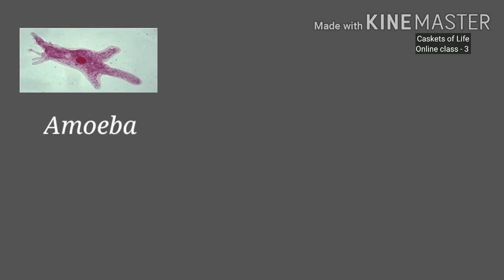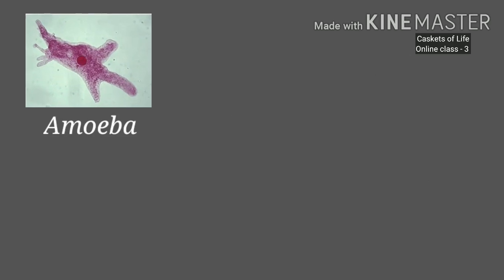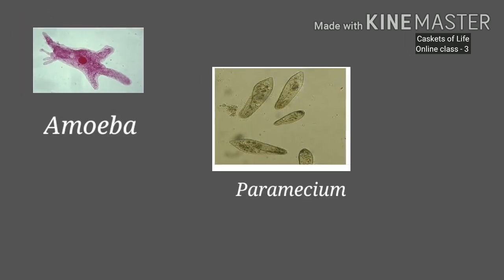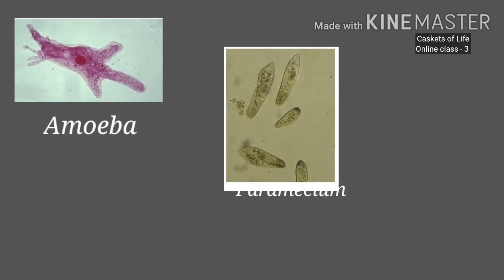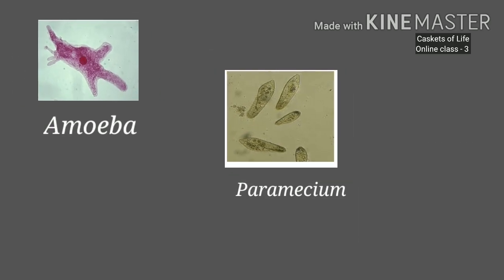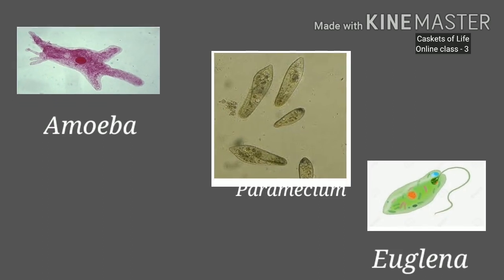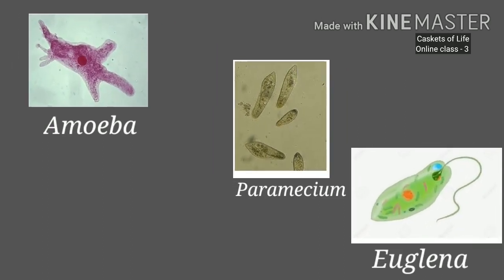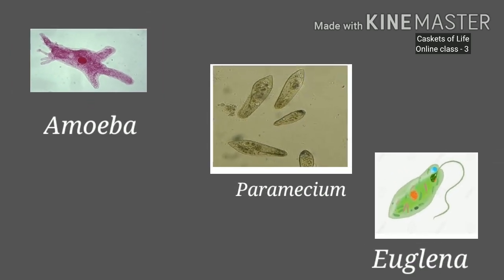The first example for unicellular organisms, which we have already discussed in the previous class, is Amoeba. The next one is Paramecium, which is also a unicellular organism. The third one is Euglena, which we found in the last class having a tail. A few more examples are planktons, diatoms, and slime molds.